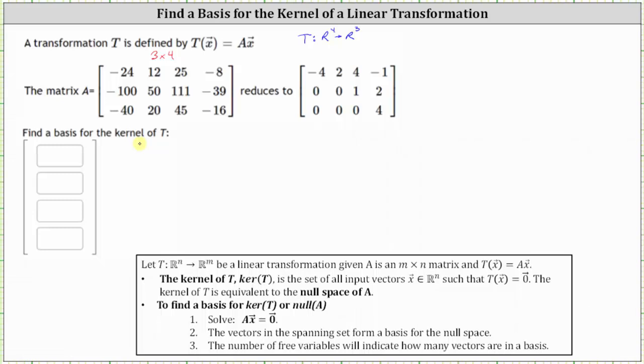To find a basis for the kernel of T or the null space of A, we solve matrix A times vector x equals the zero vector. The vectors in the spanning set form a basis for the null space, as well as the kernel of T. And the number of free variables will indicate how many vectors are in a basis.